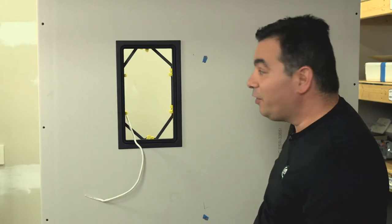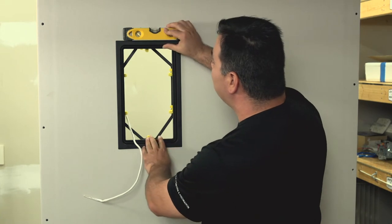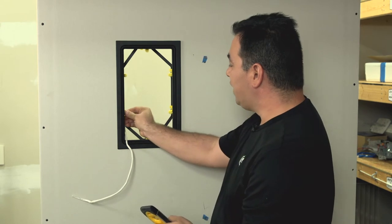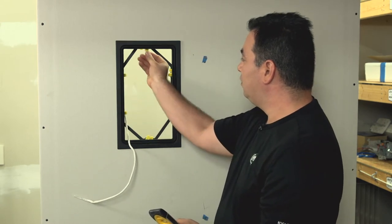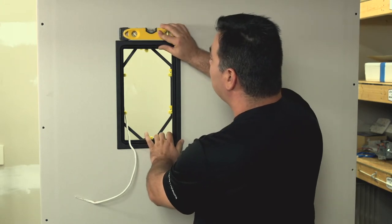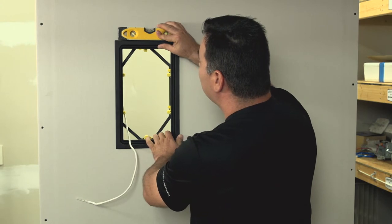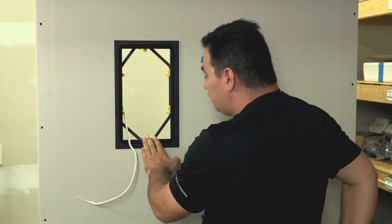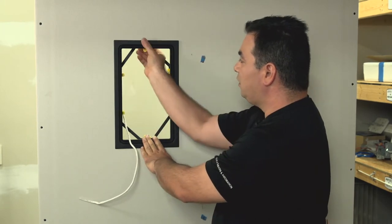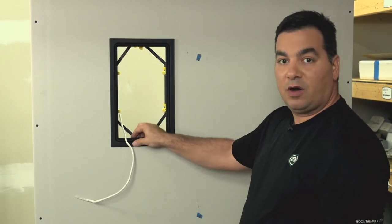It's almost one hand operation. I want to go ahead and check, make sure that I'm level. In this case, I'm not. So I'll simply loosen these tabs up just a bit and then I can readjust that. They're on level. I'll go ahead and pull those down again. They're in with friction and I'm sure that I'm securing the wall.